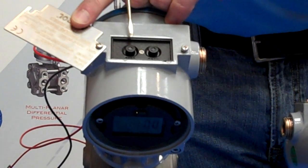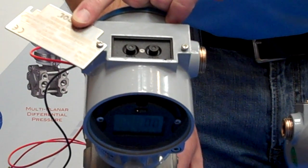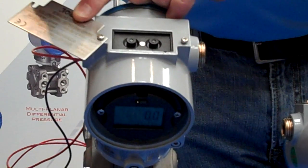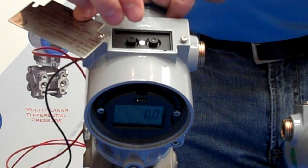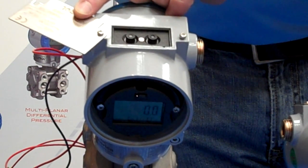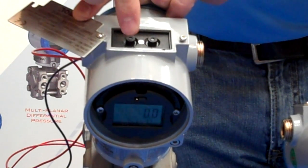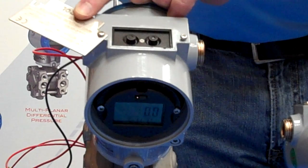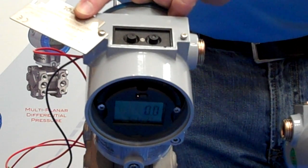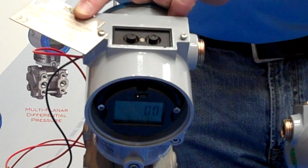We are going to use these two buttons to access the programming modes. One thing to note before we get started is that to actually enter configuration modes, we push them both together. If we push one or the other separately, that's going to be utilizing a different programming technique which will require a pressure source.